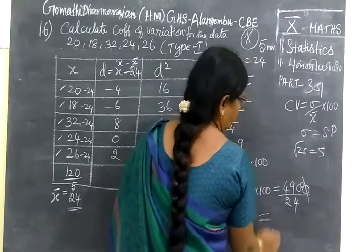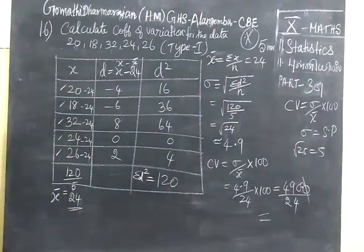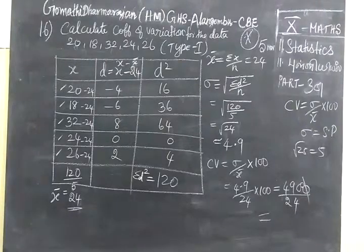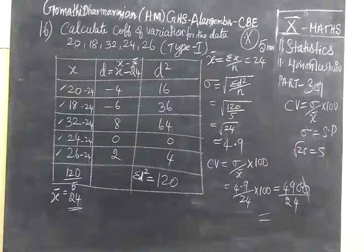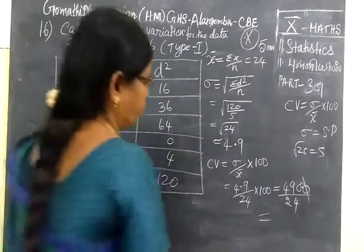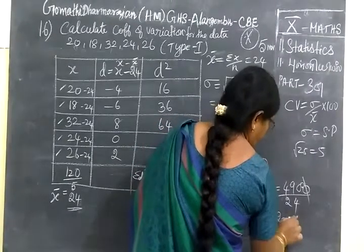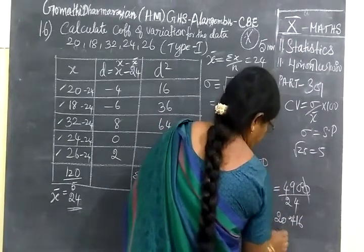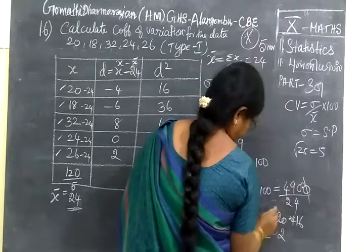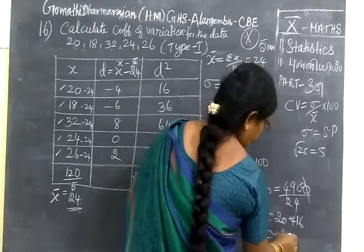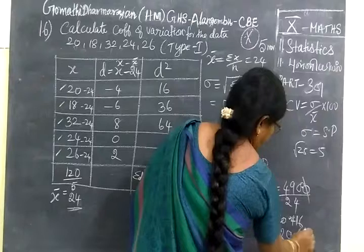So if you divide, you get the answer as 2. 4, 90 was that. So, 20.416. So this is approximately equal to 20.416 is equal to 20.42.